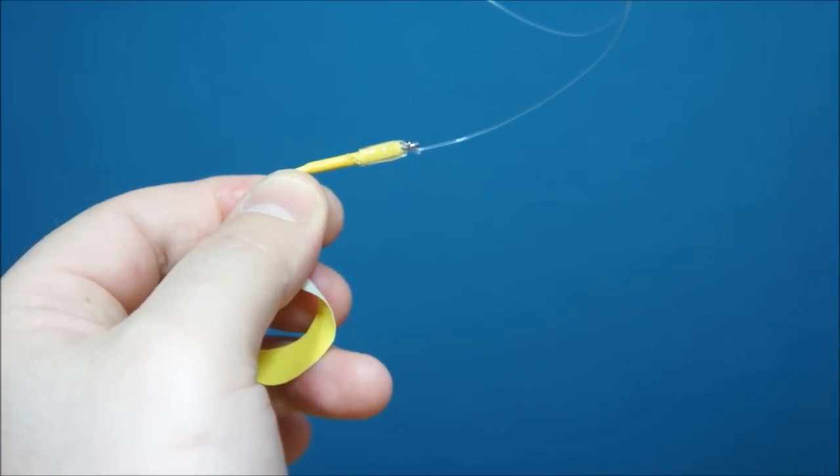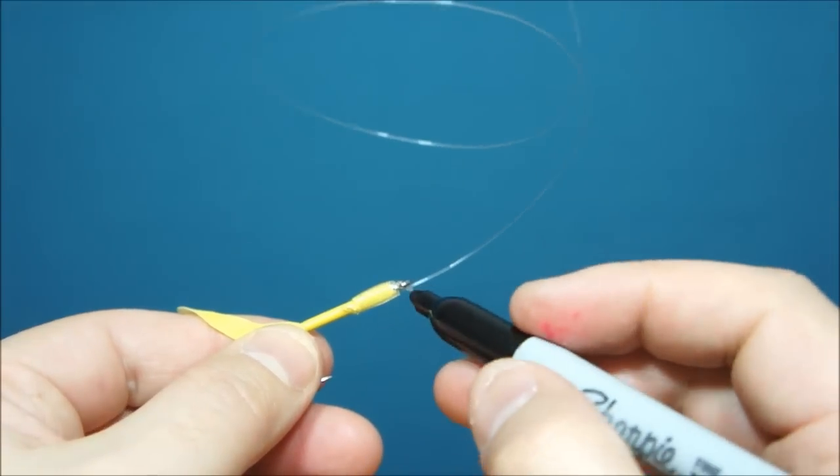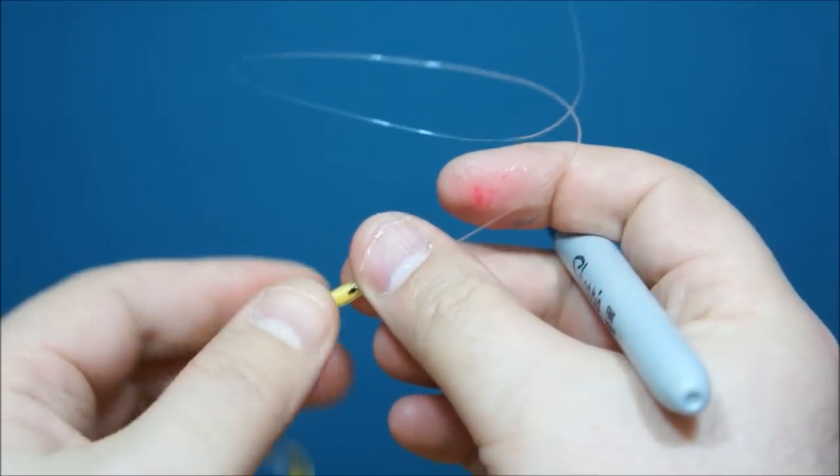I'm going to leave that to dry for a minute and then come back to it. So once the nail varnish had a bit of time to set, I'm just going to take the marker and just make a little eye spot.